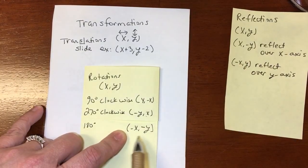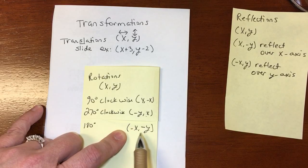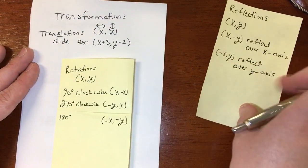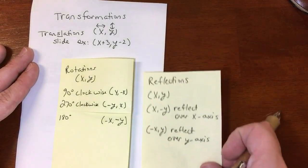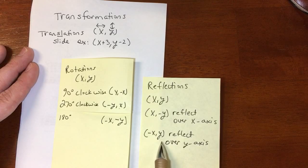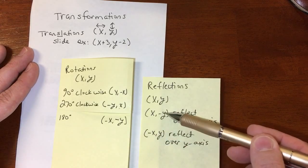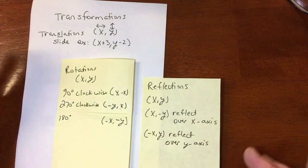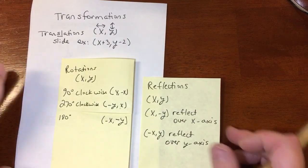Now, the 180 rotation - the X and the Y stay in the same spot, but they both turn negative. So it's a little bit different than the reflections, because with the reflections, the X and the Y stay in the same location, but one of them turns opposite. With the 180, they both turn opposite. So I can kind of narrow it down just using that.